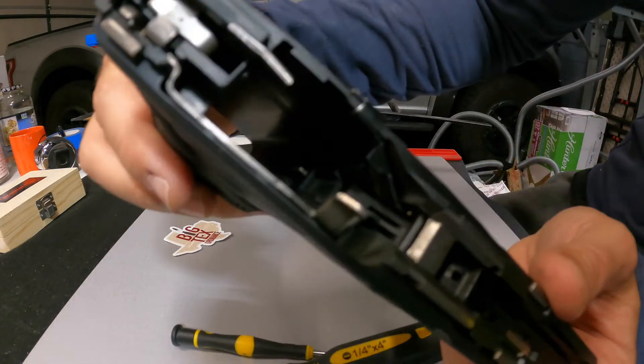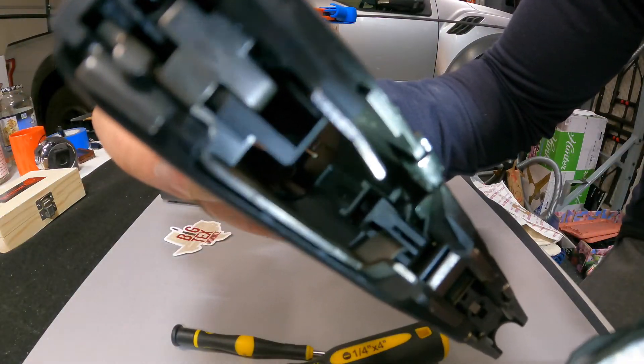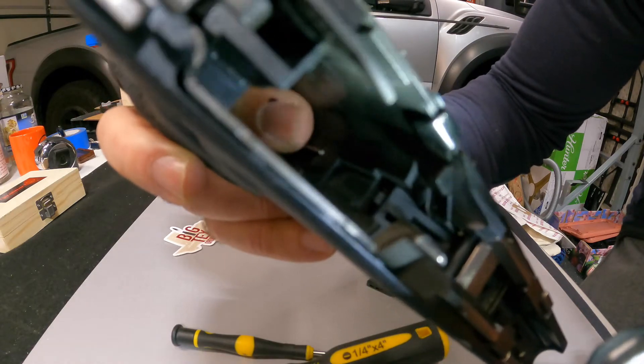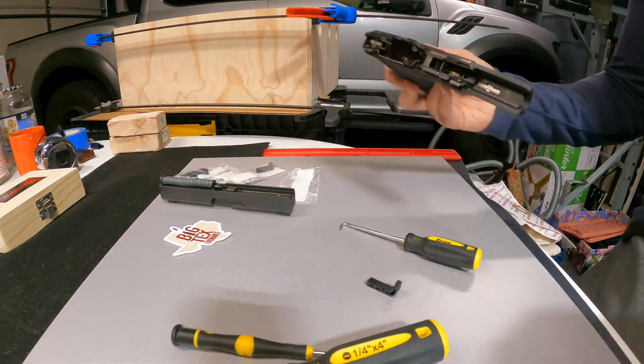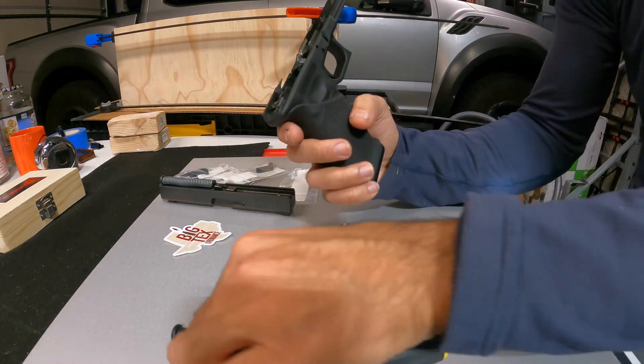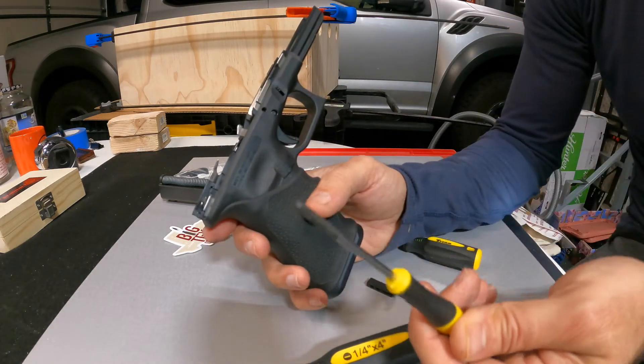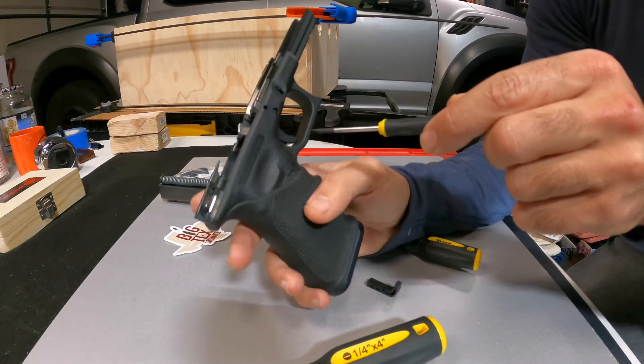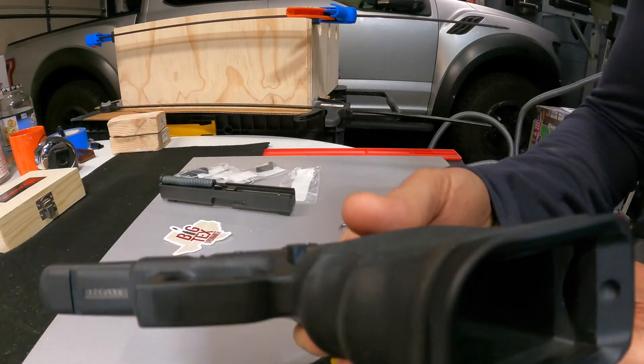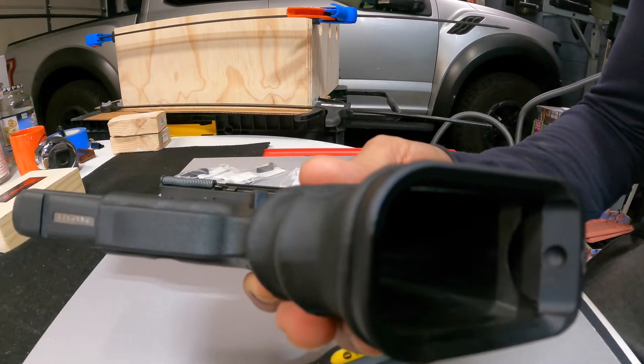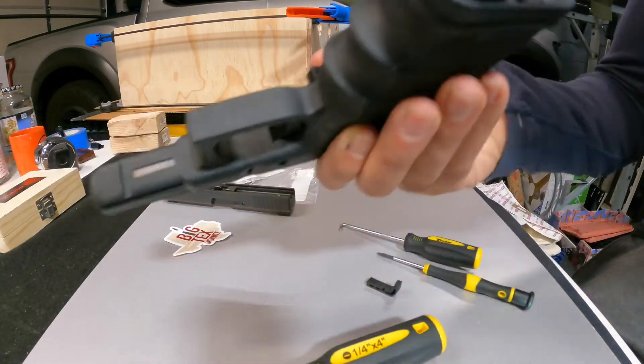The other way to do it when you're installing the new magazine release is to get this small flathead, push it forward, and then you'll be able to slide in the new magazine release. You can already see it sticking up much more.